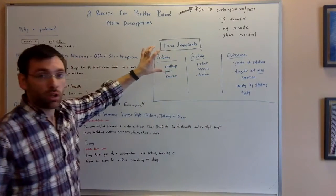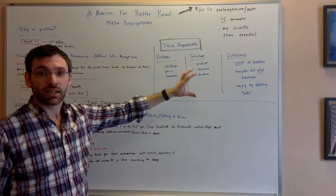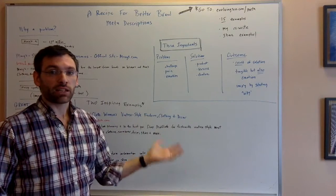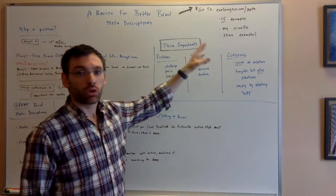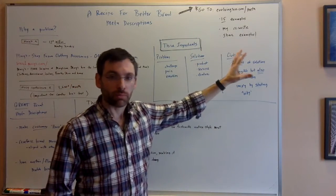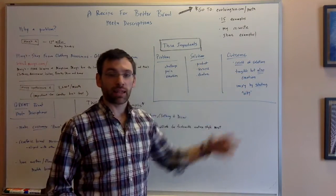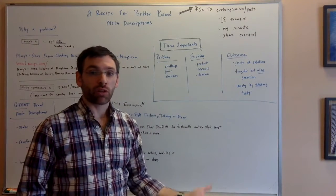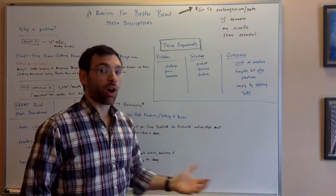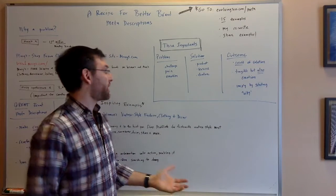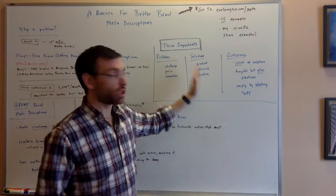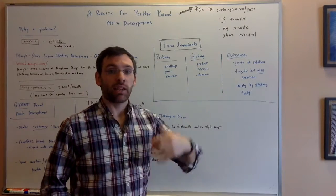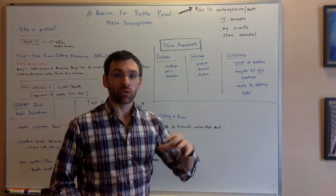Now, how do we get there? How do we achieve that? That's where we're going to move over here to the three ingredients of a great brand meta description. We've got three ingredients: problem, solution, and outcome. Now, these are three very common things that go into marketing material. People that do CRO will often optimize their landing pages to highlight the problem, to show that they have the solution, and then explain or convey what the outcome of that solution is going to be.